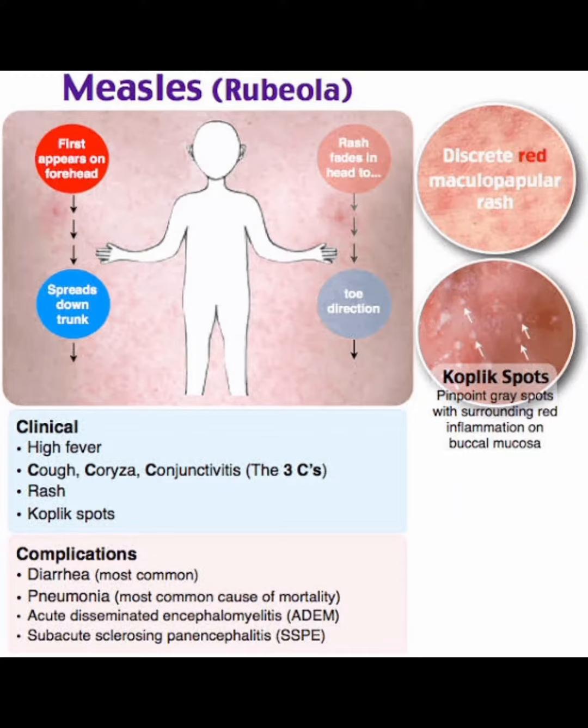Assalamu alaikum dear viewers. In this video I am discussing about measles. Another name of measles is rubiola. Regarding the presentation, look at the image — it is very important. The rash first appears on the forehead then spreads down to the trunk.